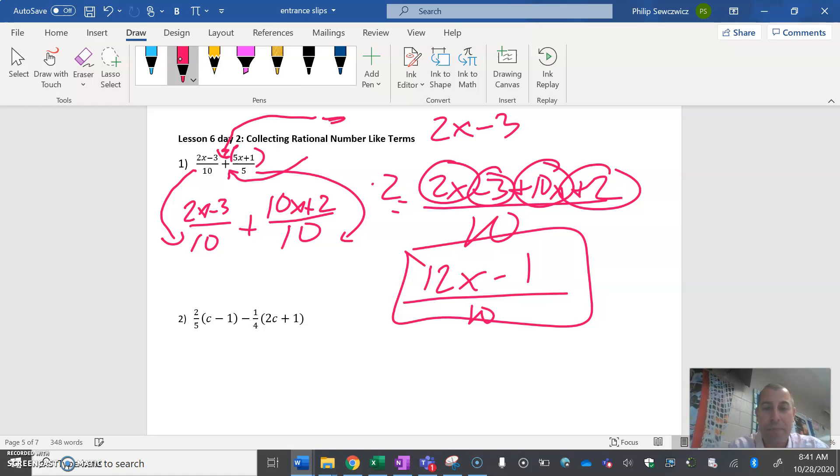Just to show you, if this problem was a subtraction sign, that subtraction sign has to go with everyone. It would no longer be 10x, it would be minus 10x. That subtraction sign also goes with the two, so it would be minus two. That's what you've got to be careful for when it's addition versus subtraction.